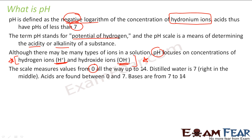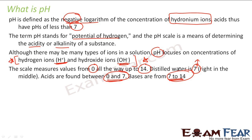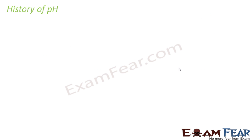The scale varies from 0 to 14. Distilled water is 7, right in the middle — it is neither acidic nor basic. Acids are between 0 and 7, and bases are between 7 and 14. This is because pH is the negative logarithm of the hydronium ions, so anything less than 7 is acidic and anything more than 7 is basic.